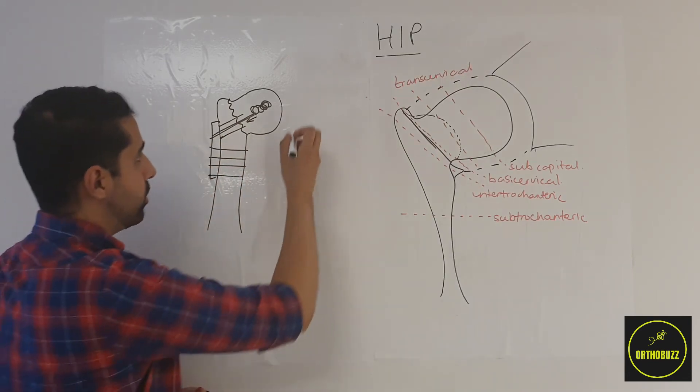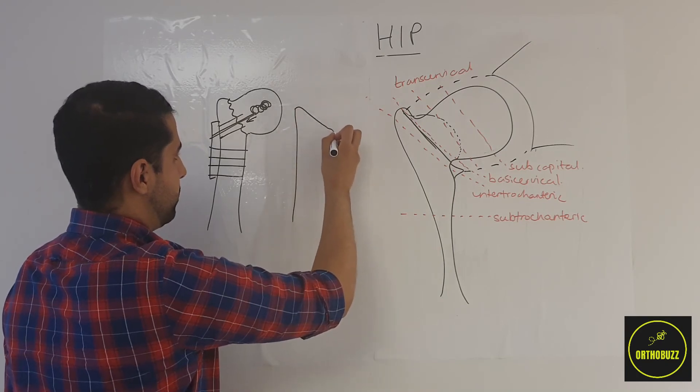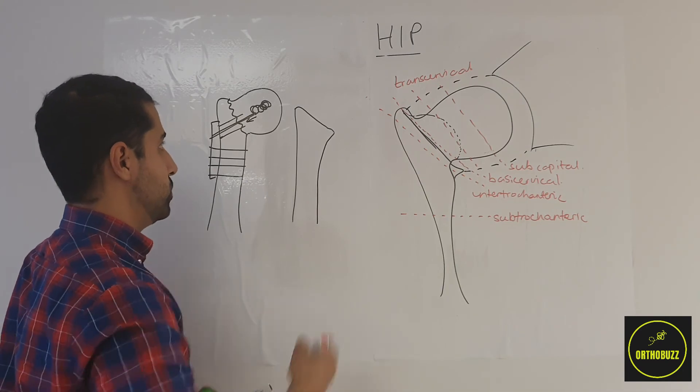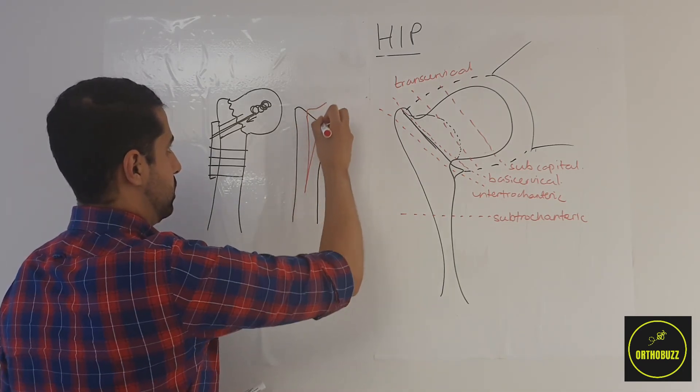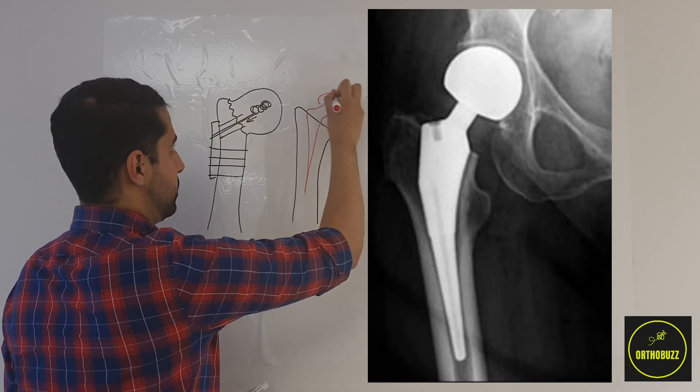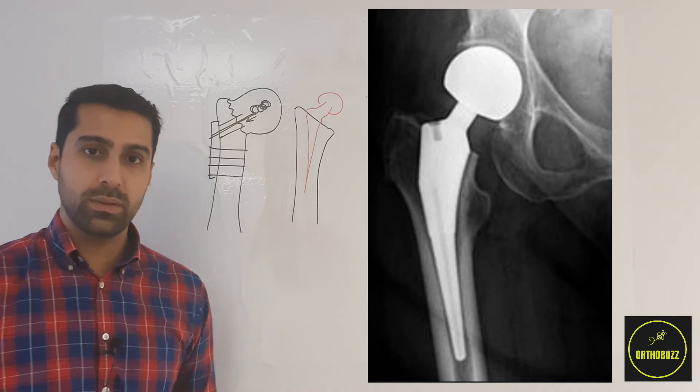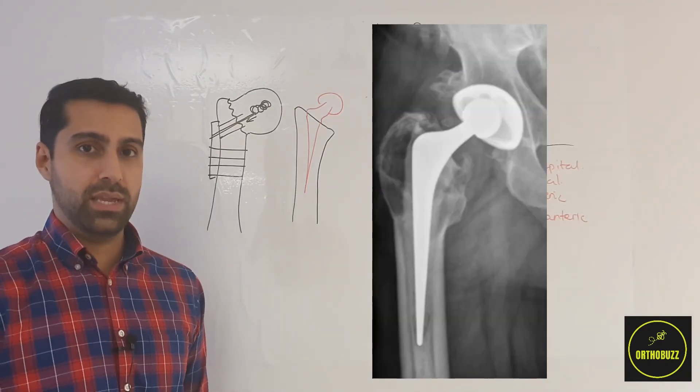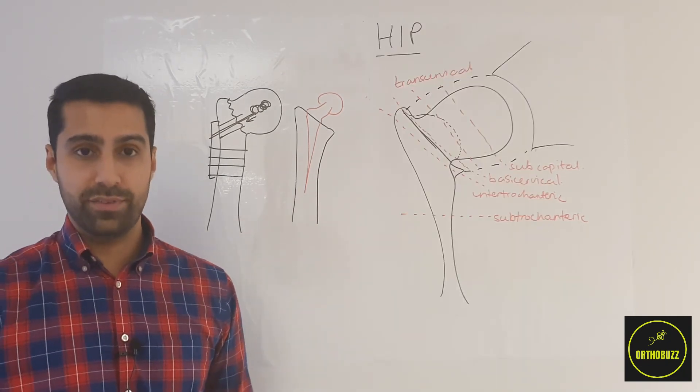The other option for intracapsular fractures is going to be a hip replacement of some sort. Now this may be a half hip replacement such as a hemiarthroplasty or a full hip replacement. The key difference being the risk of avascular necrosis to the head of the femur.